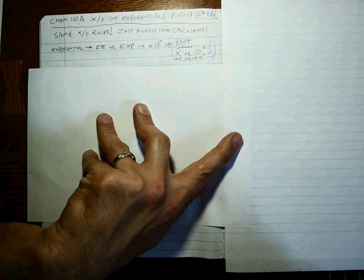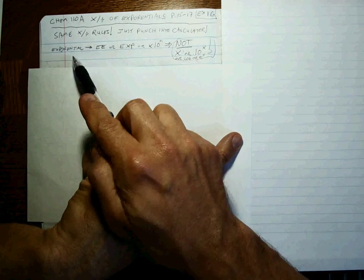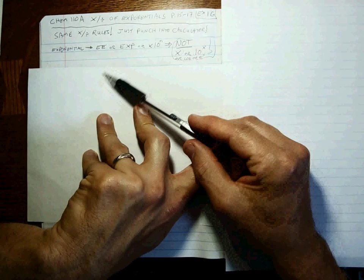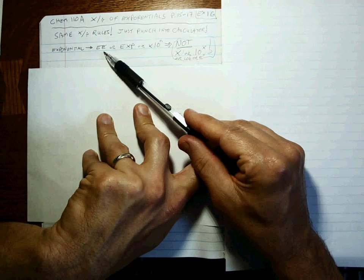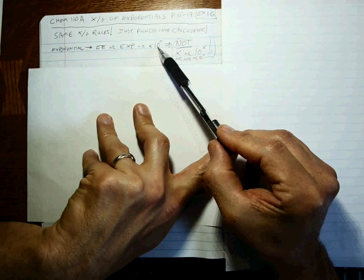Chances are, putting a number in exponential notation will require you to hit an EE button, or maybe an EXP button, or maybe a times 10 to the N button.